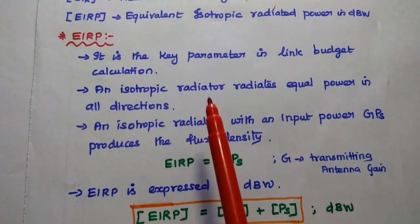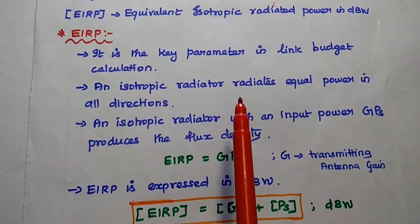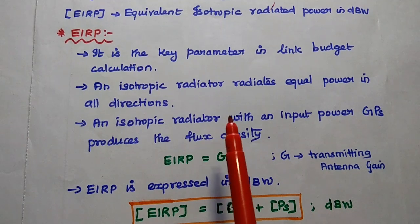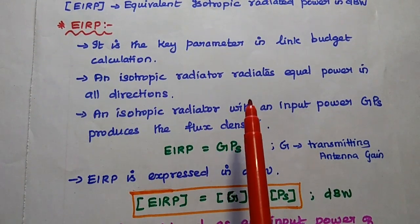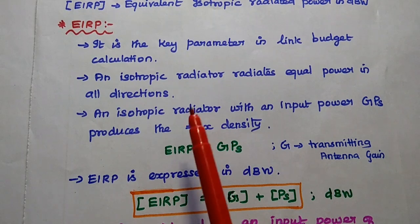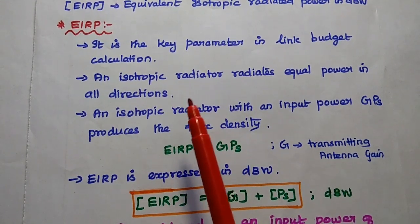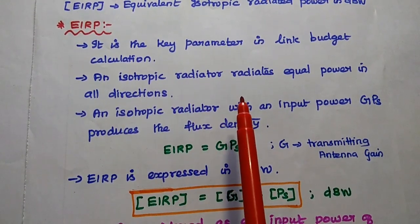Here isotropic radiator radiates equal power in all directions. It is a theoretical concept. Practically it is not possible, so for analysis and measurement purposes, we can use this isotropic radiator as a reference.